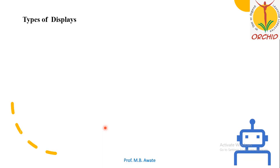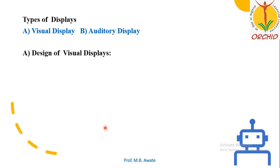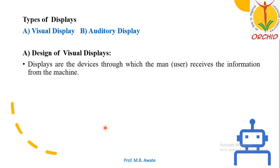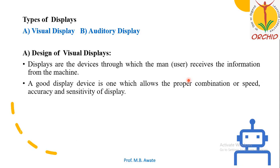There are two basic types of displays: the visual display and the auditory display. We will start with the design of visual displays. Displays are the devices through which a user receives information from the machine. A good display device is one which allows the proper combination of speed, accuracy, and sensitivity. These are the characteristics of a good display device.